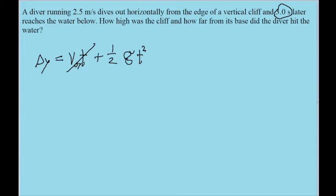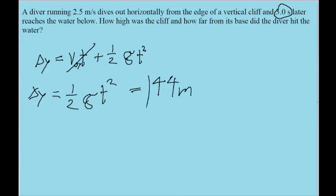So if we want to find the change in vertical position as the diver falls, the only term we need is one half times g times t squared. Putting this into our calculator — they've been falling for three seconds — so one half times 9.81 meters per second squared times 3.0 seconds squared gives us a value of about 44 meters. This means over three seconds, the diver fell over 44 meters, which is how high the cliff is. That answers the first part of the problem.